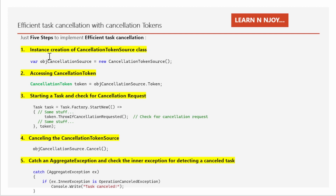What are those steps? Step number one: instance creation of CancellationTokenSource class. We need to create an instance of CancellationTokenSource, which provides the ability to cancel tasks. We just use the new operator: var objCancellationSource = new CancellationTokenSource(). This line creates an instance of the CancellationTokenSource class.